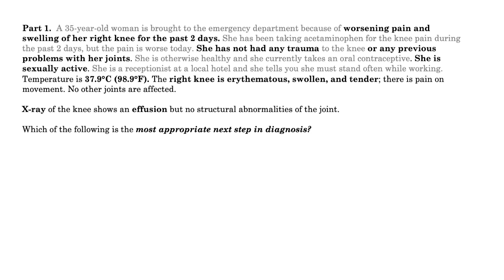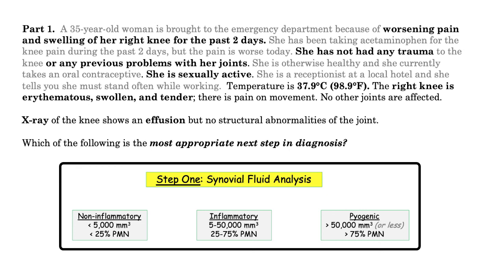Let's try one more question to highlight our principles from Step 1. This is a sequential question with two parts. We have a painful joint also for two days — no trauma or pre-existing joint issues, which essentially excludes rheumatoid arthritis. The patient is sexually active, and they love sexually active patients with acute joint problems. She is afebrile, and they want us to identify the next step in her diagnostic workup. The first step for the acutely inflamed joint on Step 2 is exactly as it was on Step 1 — the synovial fluid analysis. Nothing has changed.